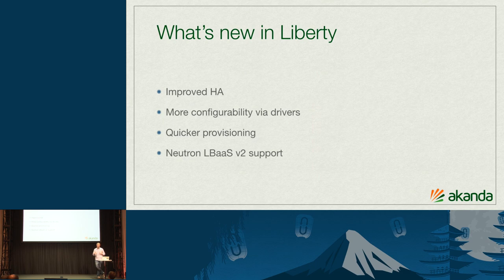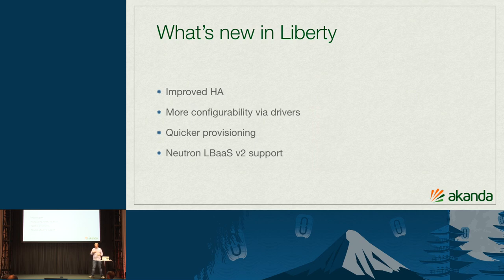We've also been improving configurability. With the drivers, you can provide different services on a cost-differentiated basis — for example, load balancing on hardware for production workloads and in software for dev/test workloads. For quicker provisioning, within Liberty we instituted a pool manager so we can have warm spares ready, cutting down time to provision especially for workloads required to run within a VM. We also rolled out support for Neutron LBaaS V2. Now that API is final in Neutron, we want to make sure we are supporting it, and we have integrations with a number of different partners.